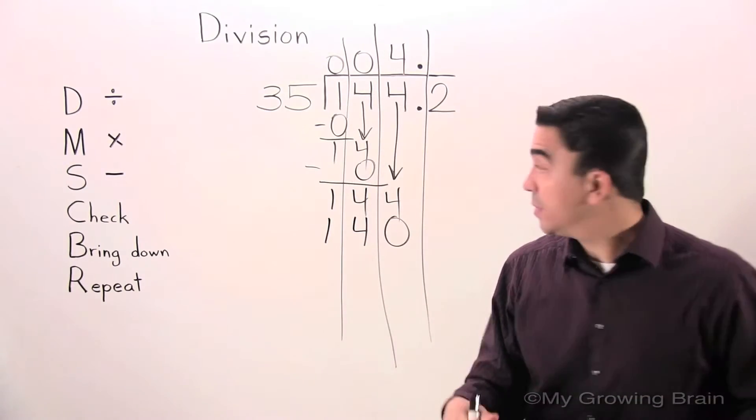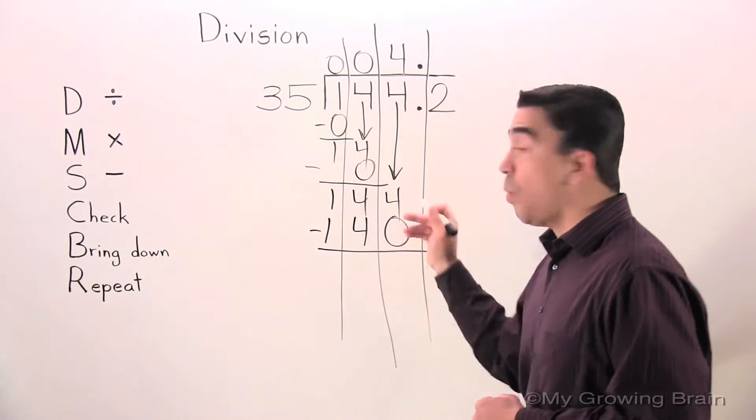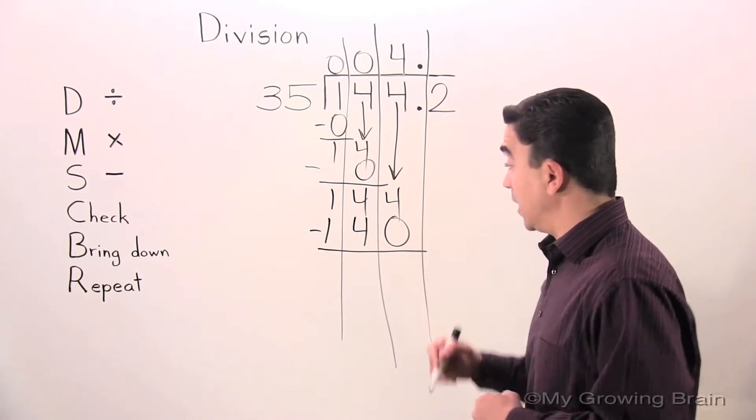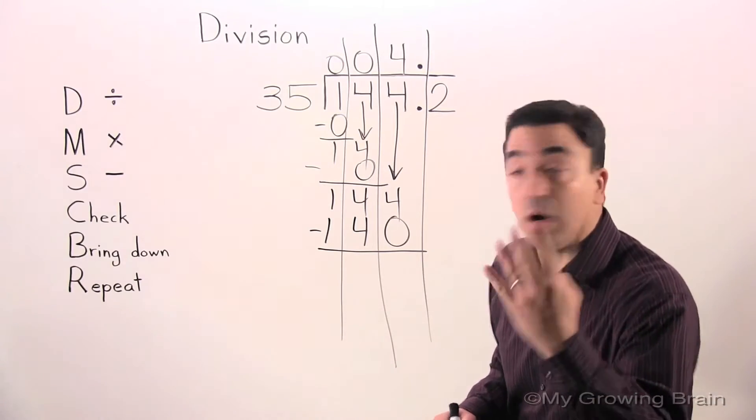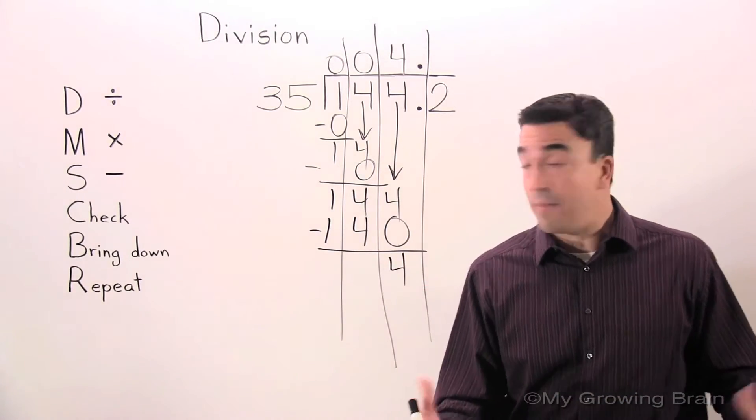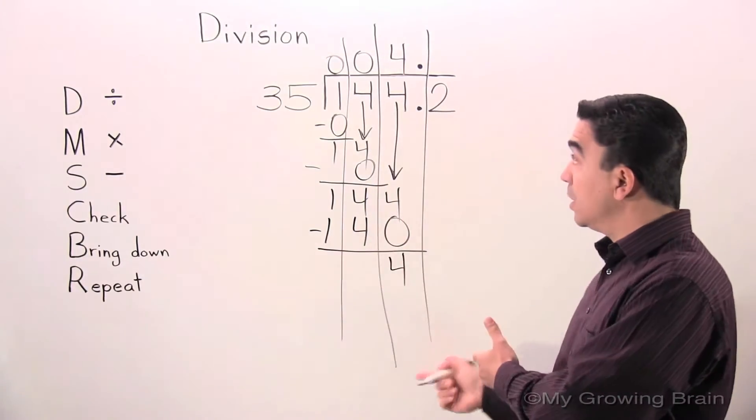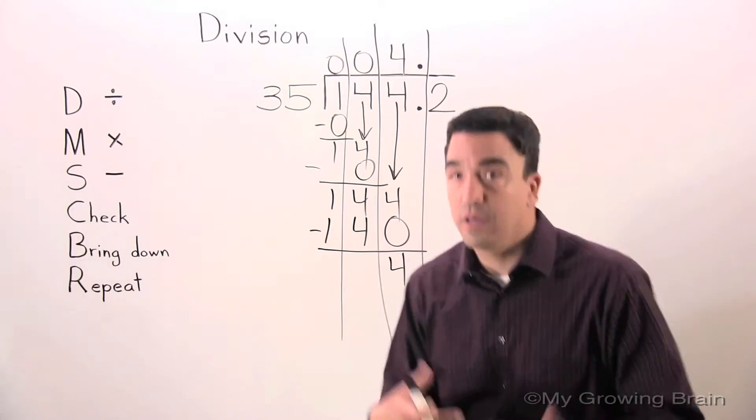Next step: subtract. 144 minus 140 is 4. Next step: check. 4 is less than 35, keep on going.